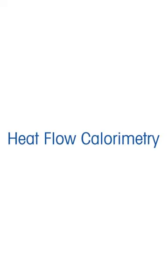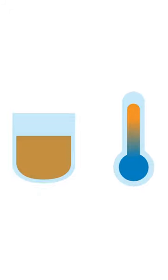Heat flow calorimetry allows scientists to measure the heat of a chemical reaction while the process temperature, typically the reaction mass temperature, remains at the set value. Usually, a double-walled reactor is used in which the desired reaction is carried out under or near process-like conditions.